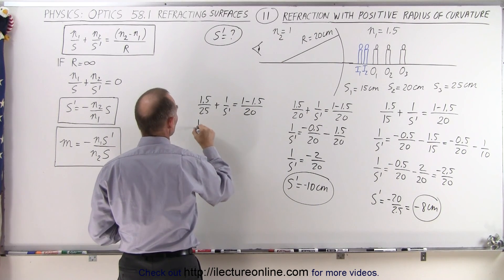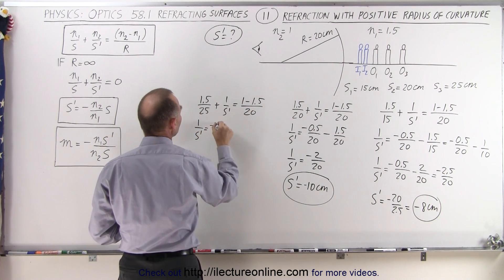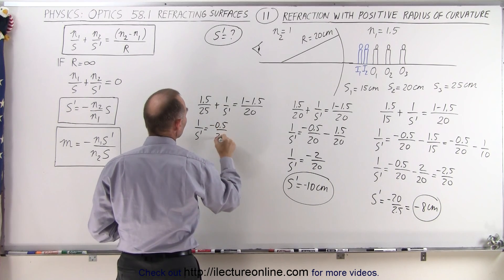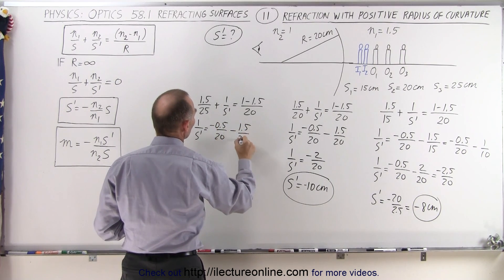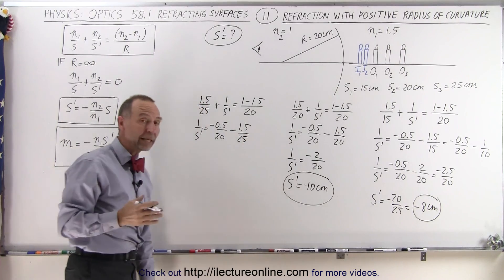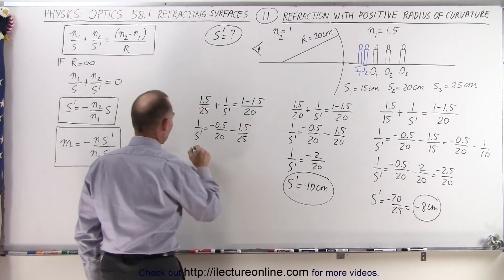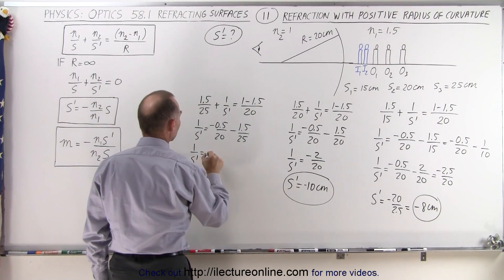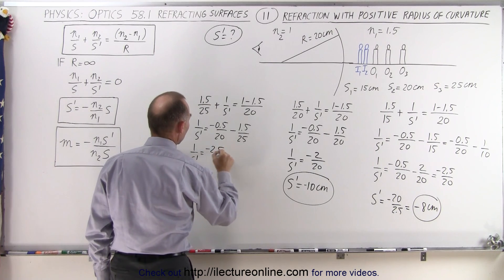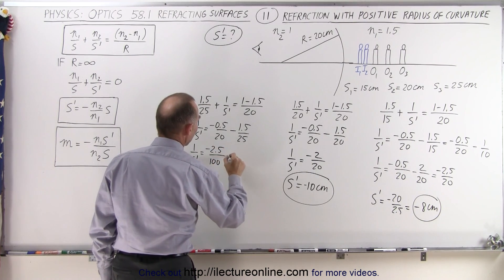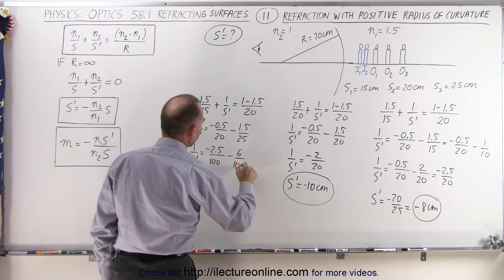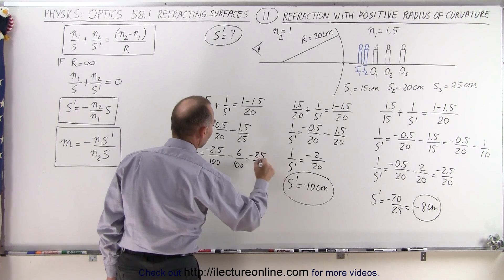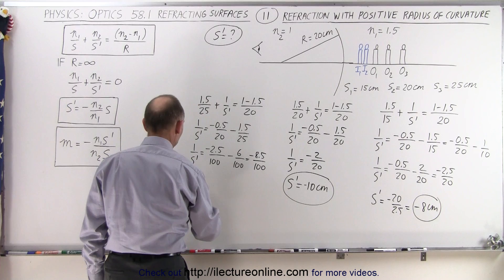So this becomes 1 over S' is equal to minus 0.5 over 20 minus 1.5 over 25. The common denominator here will be 100, so we have 1 over S' is equal to minus 2.5 over 100 and minus 6 over 100, which is minus 8.5 over 100.